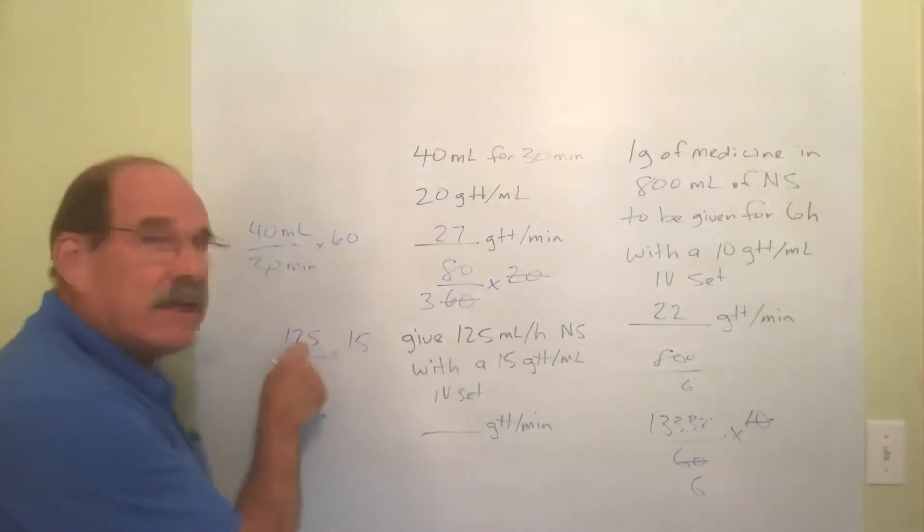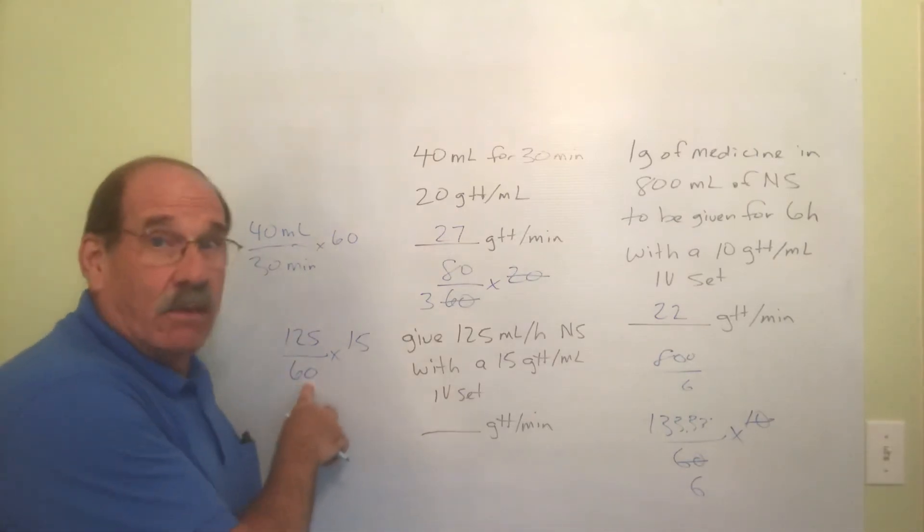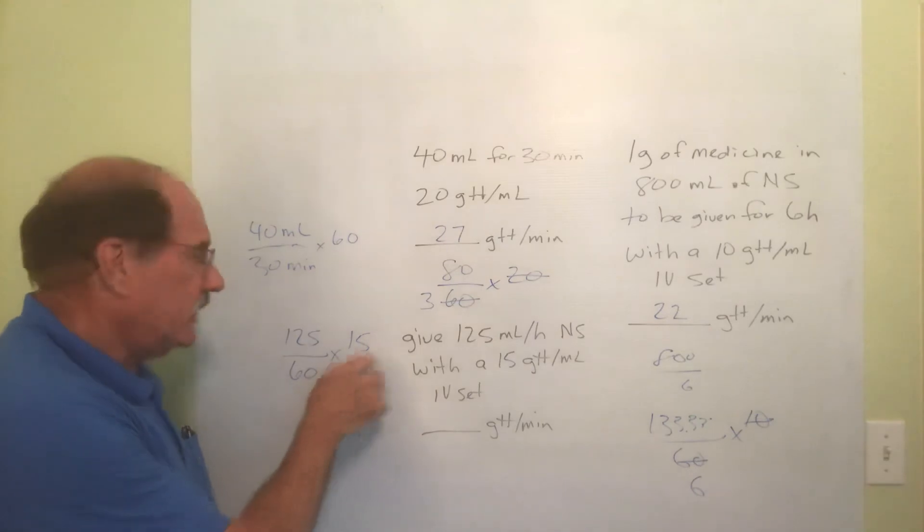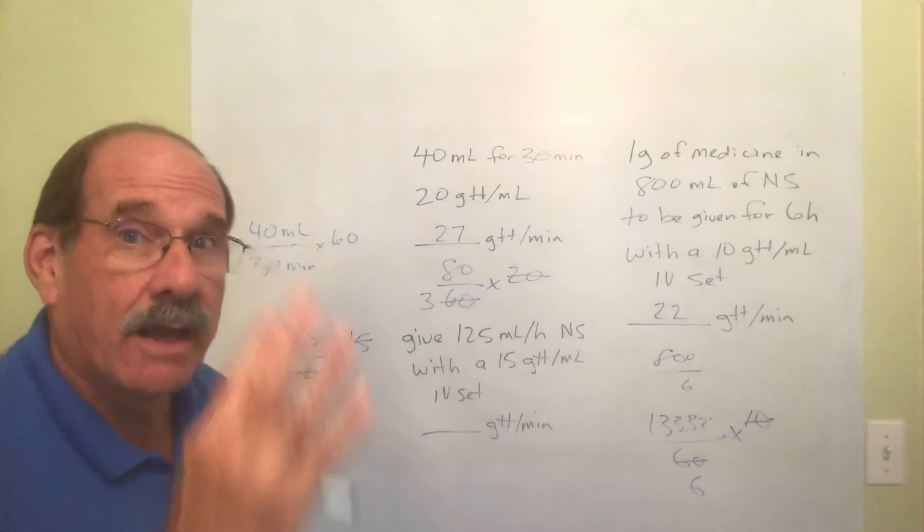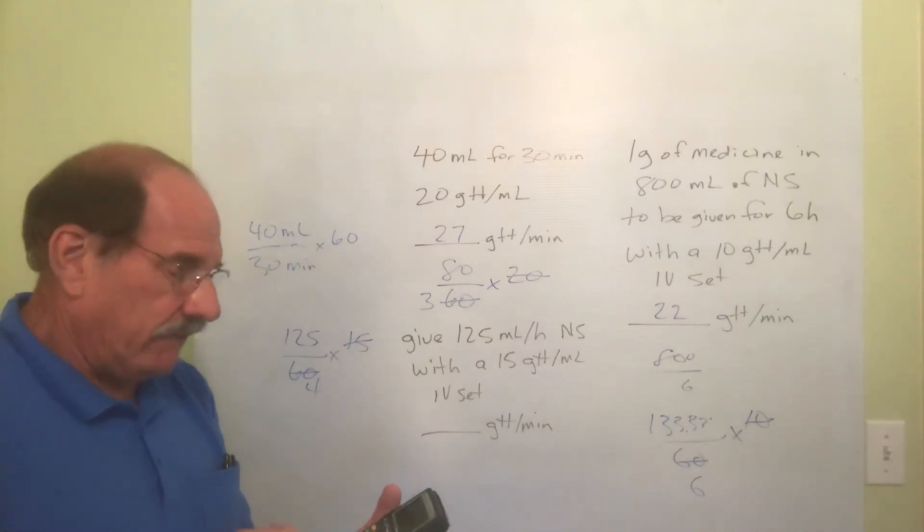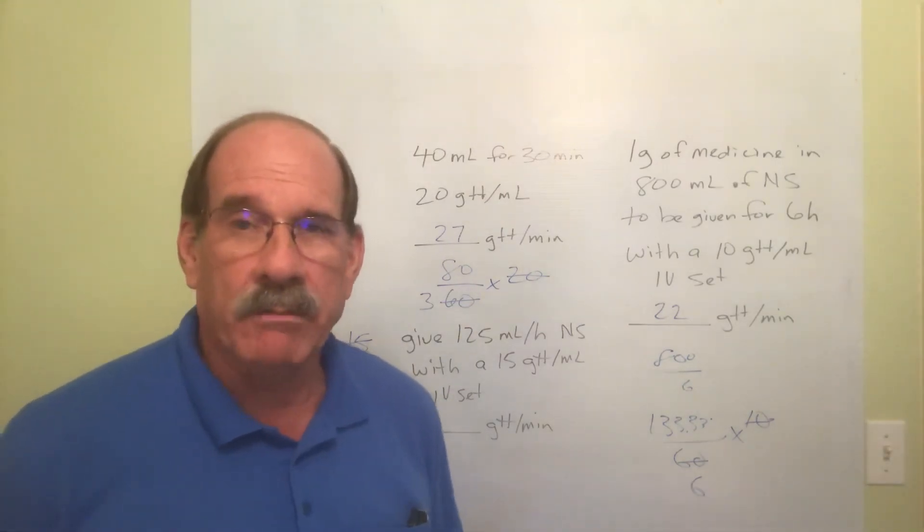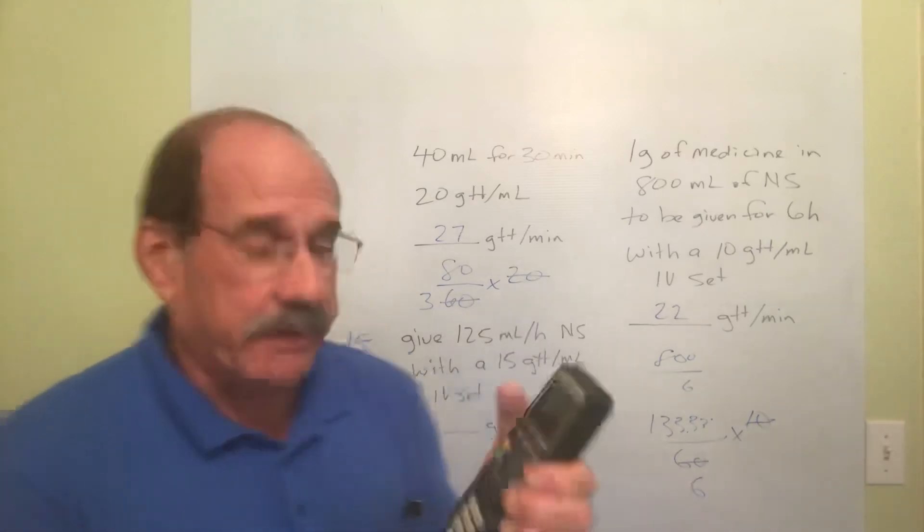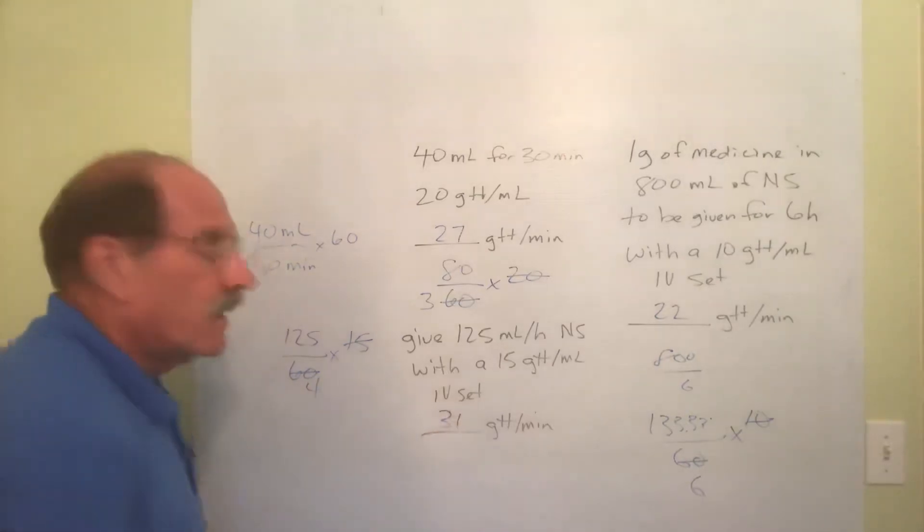You're told what V is - you don't even have to do math to find that. You know 60 is always T. You're told the calibration is 15. The math is 15 goes into 60 four times. The only thing to do now is take 125 and divide it by four - 31.25. What does that round off to as a whole number? 31.25 is 31. The answer is 31 drops per minute.